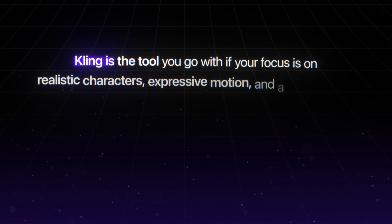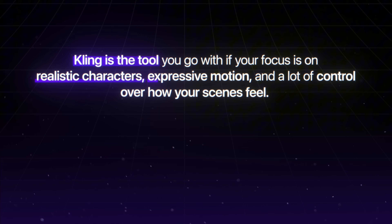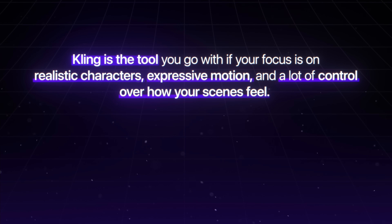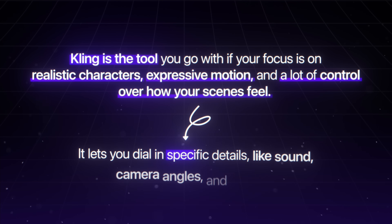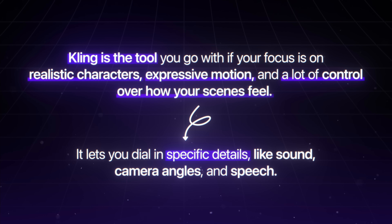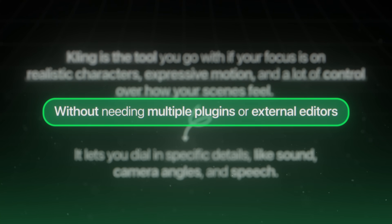Kling is the tool you go with if your focus is on realistic characters, expressive motion, and a lot of control over how your scenes feel. It's one of the few tools that actually lets you dial in specific details like sound, camera angles, and speech without needing multiple plugins or external editors. It's best for solo creators, TikTok channels, or faceless YouTube formats where you want a believable digital character to carry the scene. That said, it's not made for huge wide shots, stylized animation, or ultra-fast results. It's strong in one lane, and it nails that. Keep watching — the next tools might actually be a better match for your workflow.